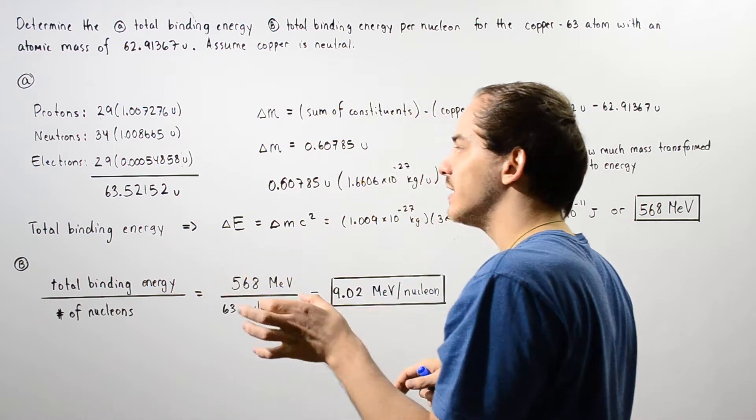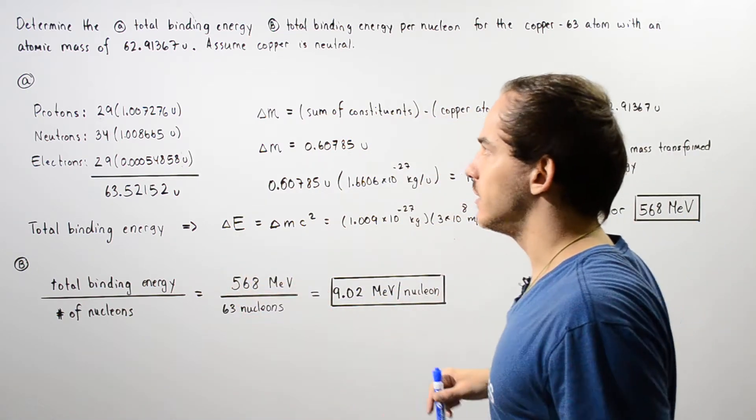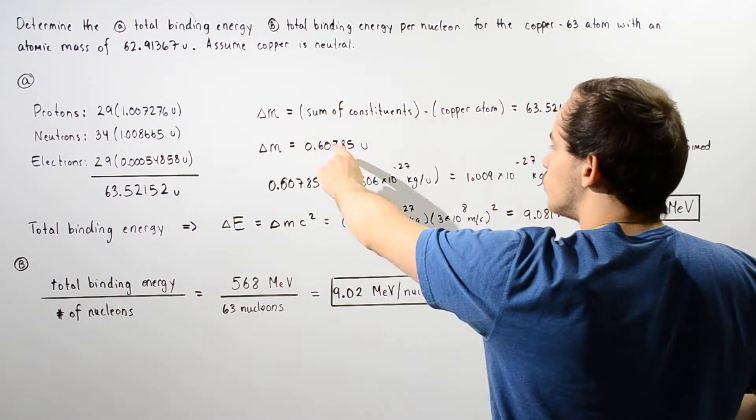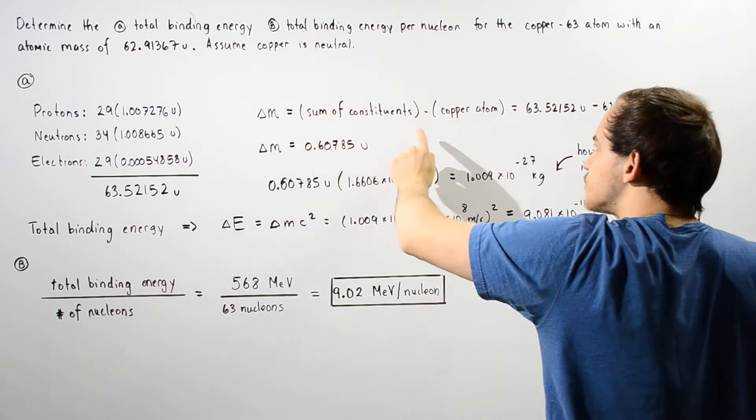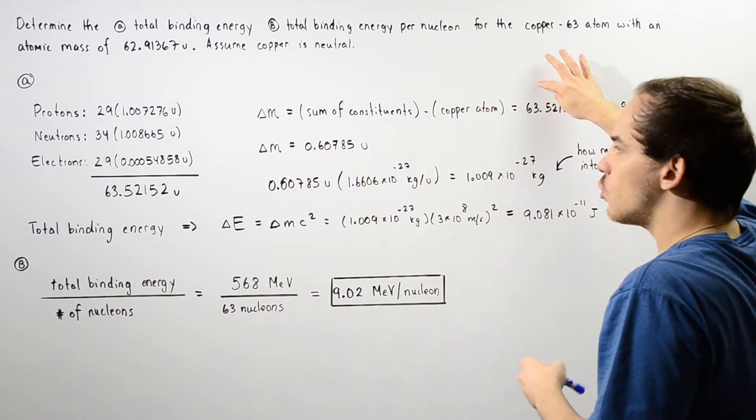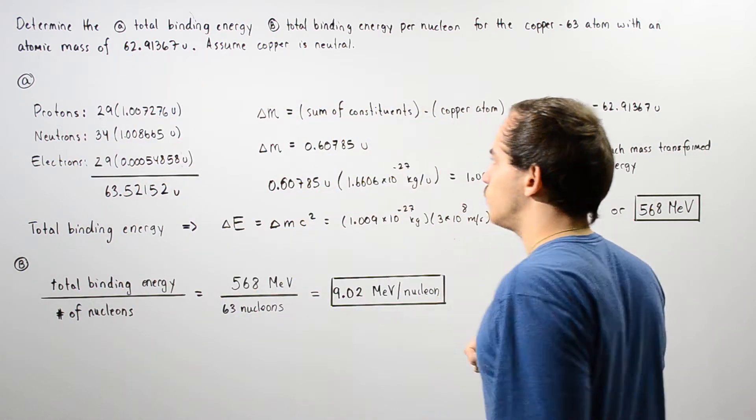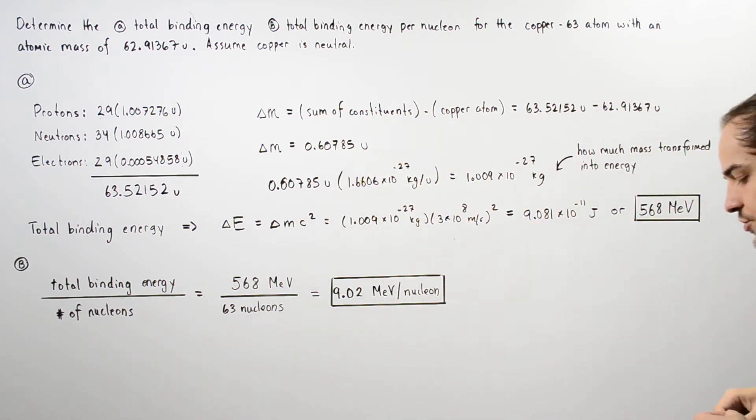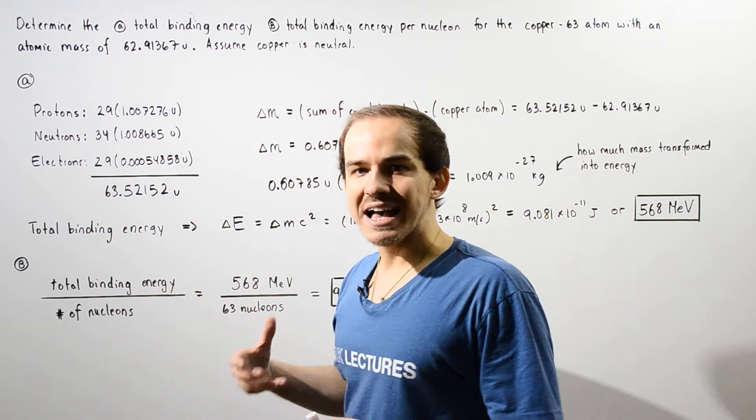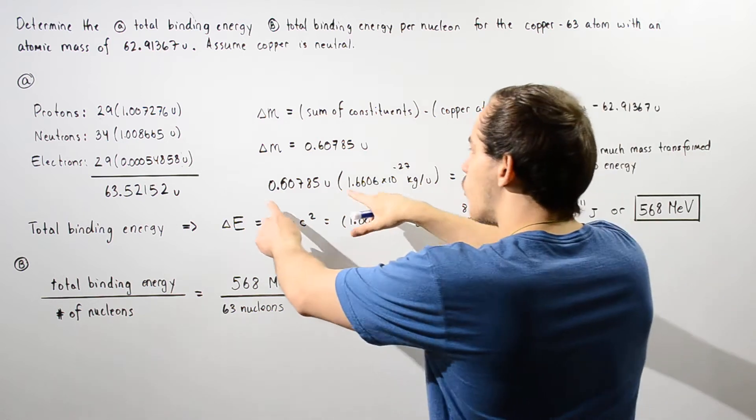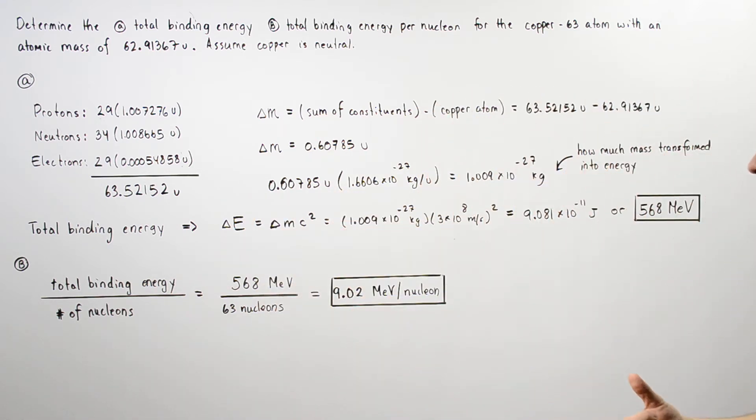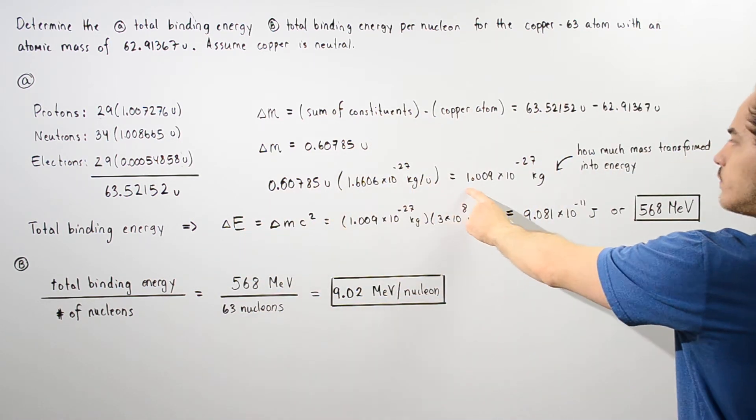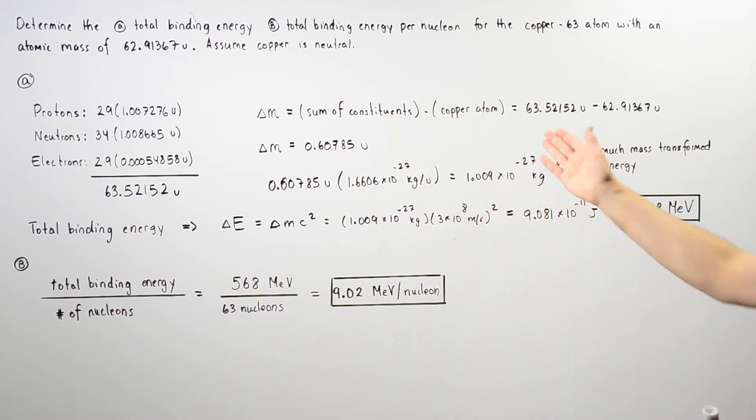Now to calculate the energy, we have to first calculate the change in mass between these two quantities. Delta m, the change in mass, is equal to the mass of the sum of all the constituents minus our copper atom. We take this quantity and subtract this and we get about 0.6785 unified atomic mass units. To actually use the rest mass energy equation, we have to transform unified atomic mass units into kilograms. We multiply this by our conversion factor and we get 1.009 times 10 to the negative 27 kilograms.